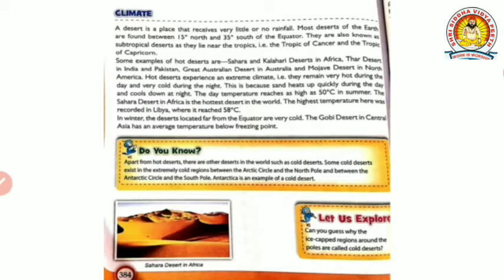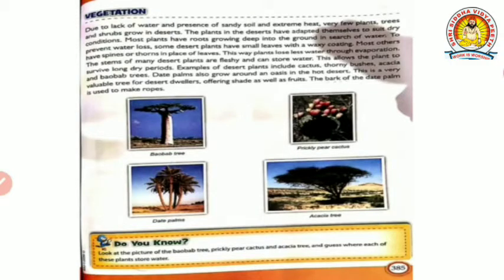Apart from hot deserts, there are other deserts in the world such as cold deserts. Not only hot deserts exist - cold deserts also exist whose temperature is below freezing point. Some cold deserts exist in the extremely cold regions between the Arctic Circle and the North Pole, and between the Antarctic Circle and the South Pole. Antarctica is an example of a cold desert where glaciers are found.